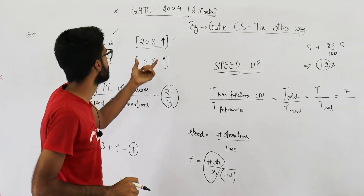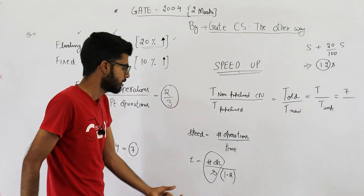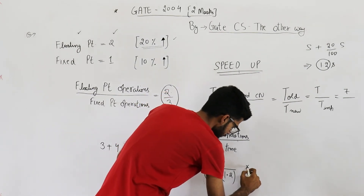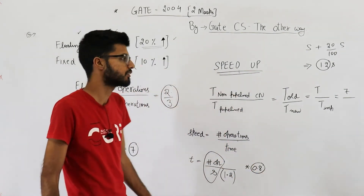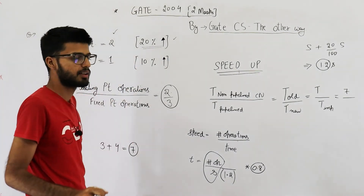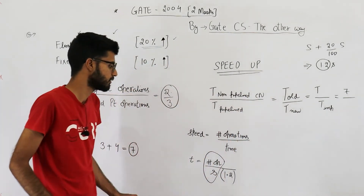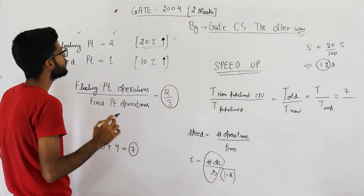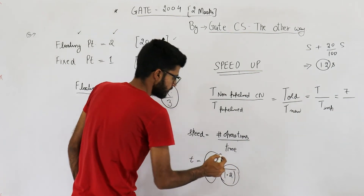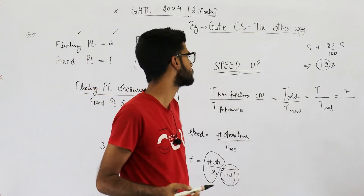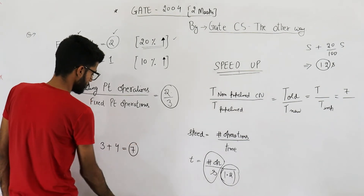We are not decreasing time by 20 percent — time is getting divided by 1.2. Increasing speed by 20 percent means dividing time by 1.2. Had it been the other way — if increasing speed by 20 percent meant decreasing time by 20 percent — then we would get 0.8 in the numerator. But that's not the case; we are getting 1.2 in the denominator. So the improvement made is: time taken now gets divided by a factor of 1.2.